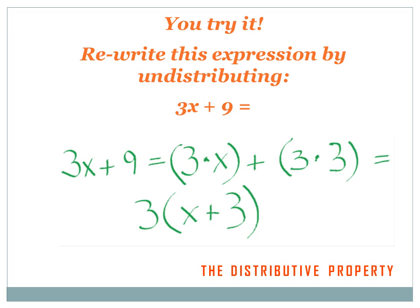3x plus 9. We can rewrite that as 3 times x plus 3 times 3. Because 3 times x is the same thing as 3x, and 3 times 3 equals 9. Now I've got a 3 in both bracketed expressions, which I can pull out, and change it to 3 times what's left in the brackets after I pull the 3s out — I've got an x, and a plus sign, and a 3 left. So 3x plus 9 is equivalent to 3 times the expression (x plus 3).